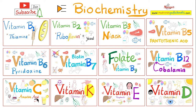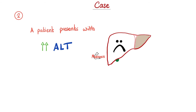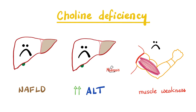First patient presents with non-alcoholic fatty liver disease — the liver is fatty but it's not caused by alcohol. A second patient presents with elevated plasma level of alanine transaminase (ALT). A third patient is having muscle weakness. What do these three patients have in common? Answer: all of them are choline deficient. Choline deficiency can make muscles weak and can make the liver fatty with elevated alanine aminotransferase. In rodent experiments, choline-deficient rats also developed liver cancer and memory loss.